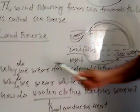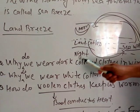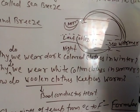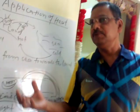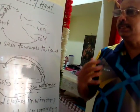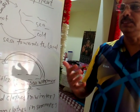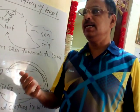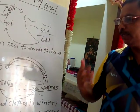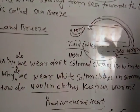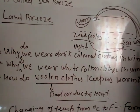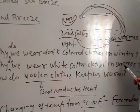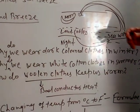Now the question arises: why do we wear dark colored clothes in winter? Because dark colored clothes are good absorbers of heat. When they absorb heat, they keep our body warm so we do not feel cold during the winter season. That is why we generally wear dark colored clothes in winter.